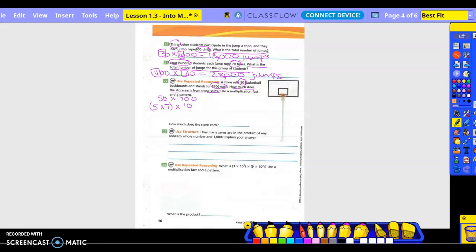5 times 10. How many zeros do we have here? So really, we need to do 10 to the third power, right, is what we need to work our way up to. So 5 times 7 times 10 to the first power